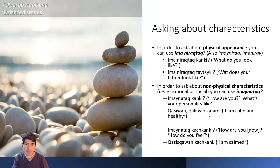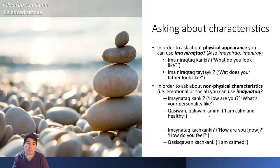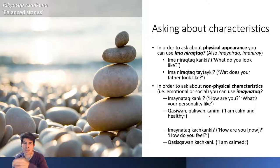For non-physical characteristics — emotional or social traits — you also use 'Imanirachtah.' 'Imanirachtah kanki' can mean 'how are you?' or 'what is your personality like?' or 'how do you feel?' For example: 'Imanirachtah kanki?' — 'Kasiwan kaliwan kani' — I am calm and healthy. 'Imanirachtah kashianki' means 'how are you now, how do you feel?' — 'Kasiaskawan kashani' — I am calm, I am at ease.